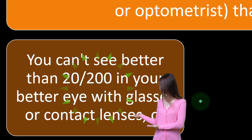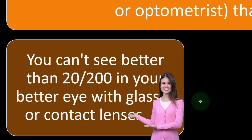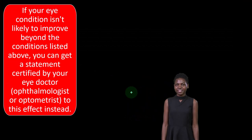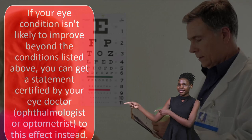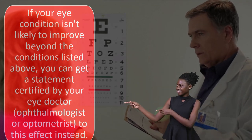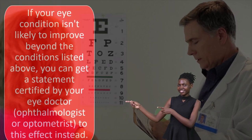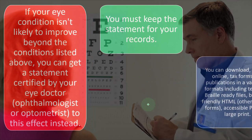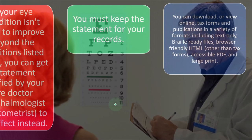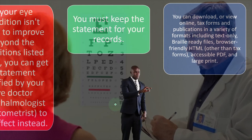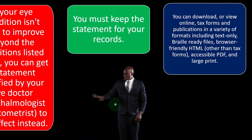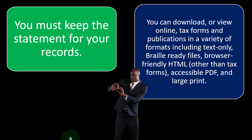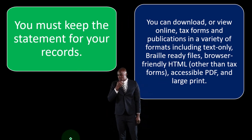You can't see better than 20/200 in your better eye with glasses or contact lenses, or your field of vision is 20 degrees or less. If your eye condition isn't likely to improve beyond these conditions, you can get a statement certified by your eye doctor, ophthalmologist, or optometrist to that effect. You must keep the statement for your records — you don't typically attach it to your tax return, but if the IRS requests documentation during an audit, you'd need to provide it.